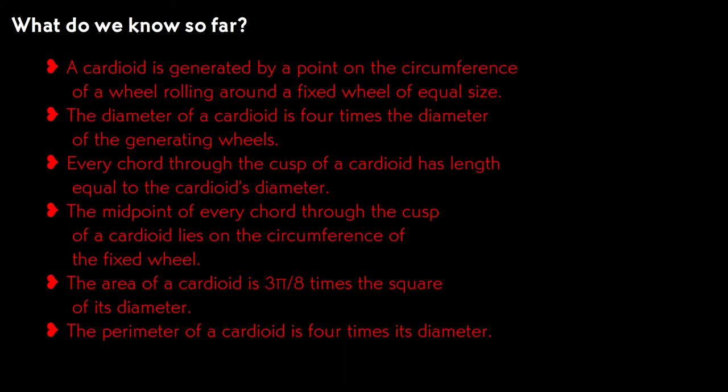So, let me do a quick review. We generated a cardioid by rolling a wheel around another wheel of equal size that's held stationary, and we called four times the wheel radius the diameter of the cardioid. Every chord through the cusp of the cardioid is equal to its diameter. The midpoint of the chords through the cusp lie on the circumference of the stationary wheel. The area of a cardioid is 3/8 pi times the diameter squared, or 3/2 the area of a circle of the same diameter. And the perimeter is four times the diameter.